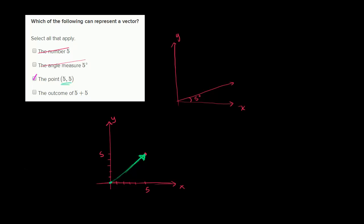The outcome of 5 plus 5. Well, obviously that's just 10, that's just a number. And for the same reason as the first choice, if I just have a number, that could be a magnitude, but we don't have a direction as well. So that one could not represent a vector.